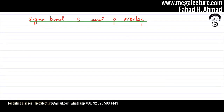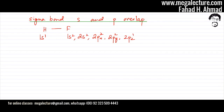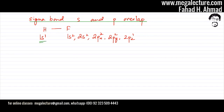Now let's talk about another type of sigma bond — between an S orbital and a P orbital, called an S+P overlap. The example I've chosen is an HF molecule. Hydrogen has a 1s1 orbital and needs one electron. Fluorine has nine electrons with electronic configuration 1s2, 2s2, 2px2, 2py2, 2pz1 — all orbitals are full except the last one, 2pz. So fluorine tries to gain an electron into its 2pz orbital by pulling an electron from hydrogen, while hydrogen does exactly the same.